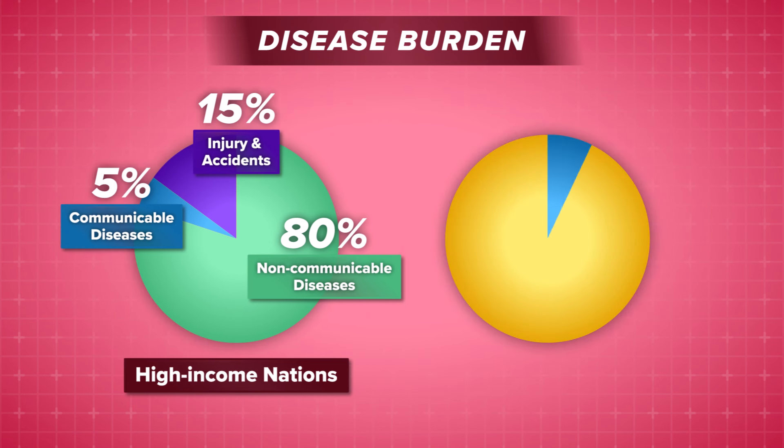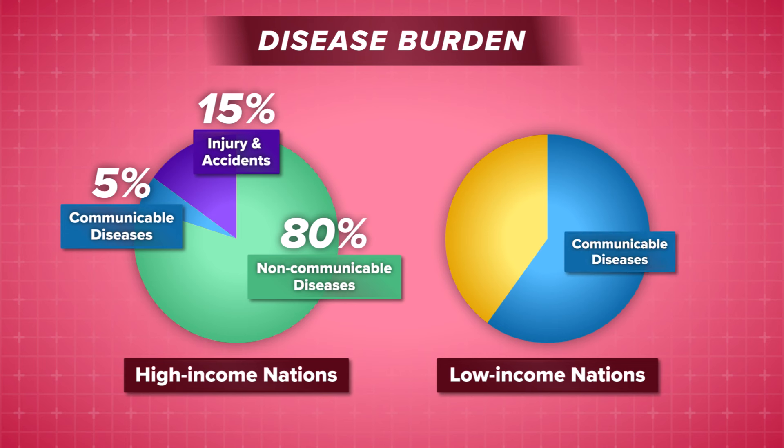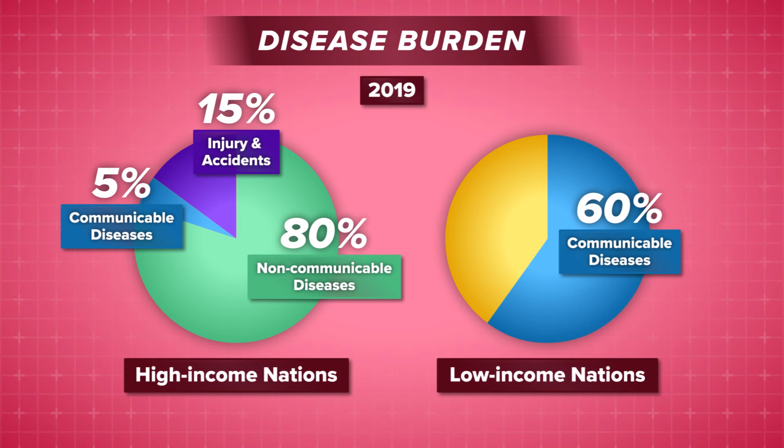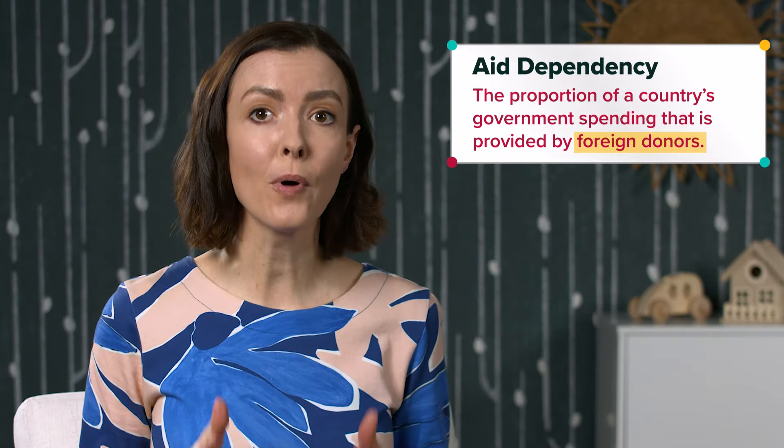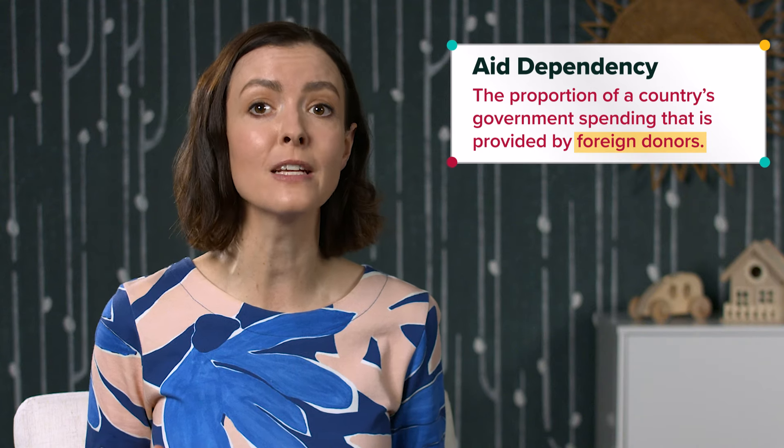However, the opposite is generally true of low-income nations, where communicable disease accounts for more than 60% of the overall disease burden. And of course, these numbers were reported in 2019, before COVID-19. And the solution to this problem feels simple, right? Low-income countries need more income. Similarly, if they need resources like food or doctors, other richer countries could step in and provide aid. Aid dependency is the proportion of a country's government spending that is provided by foreign donors.